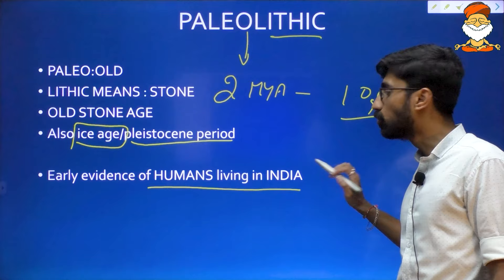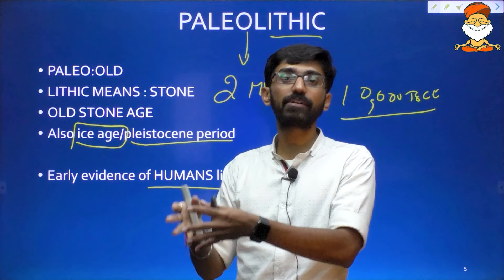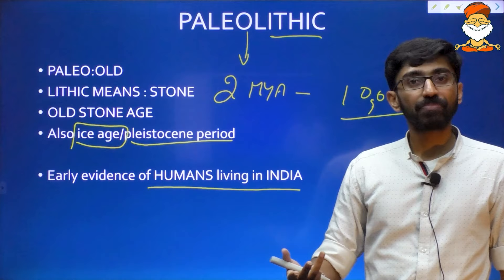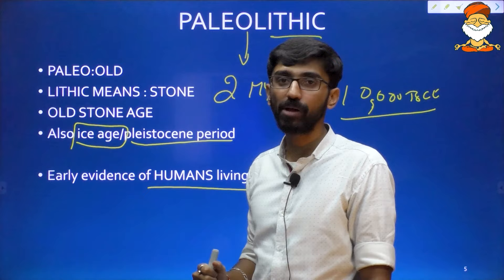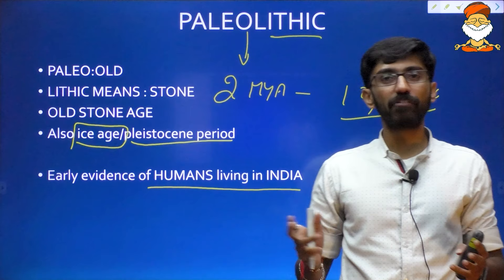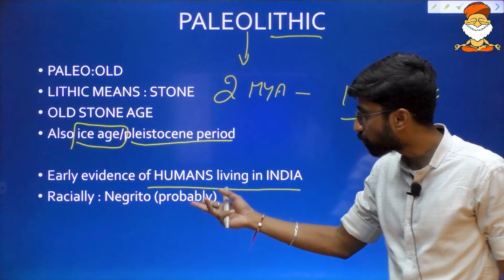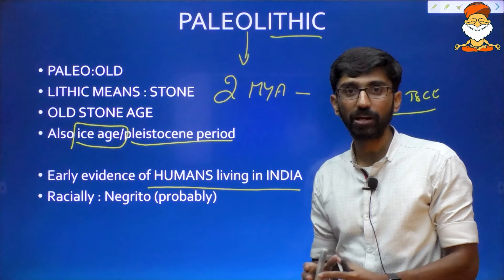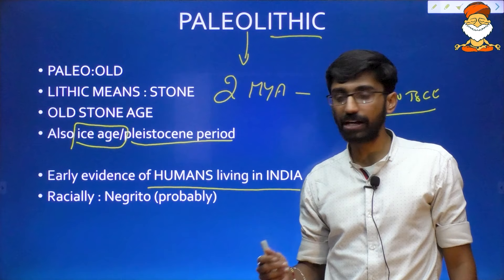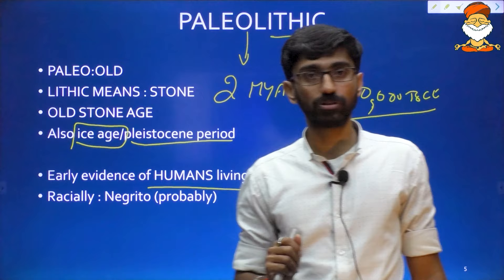This is the early evidence of humans living in India. Not before Paleolithic, but from the Paleolithic time onwards, human evolution started to happen in India. Humans started to live in India. Can you guess what is the race of this human? Today we have various races of people. According to present research, the early humans living in India probably belong to the Negrito race. So racially, they were Negrito.